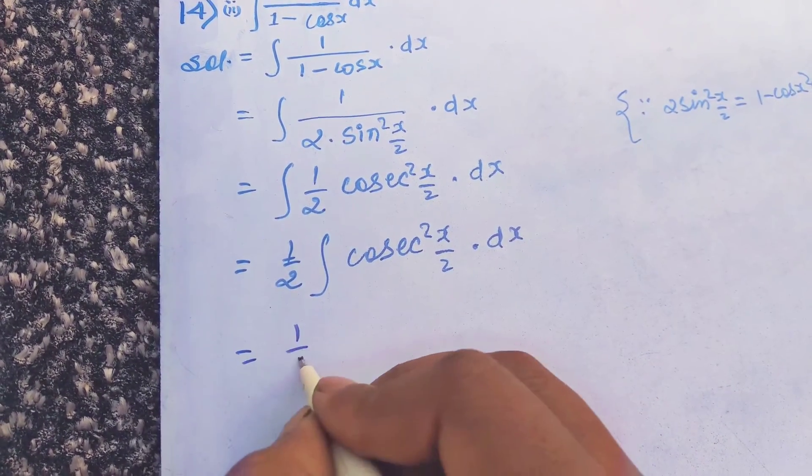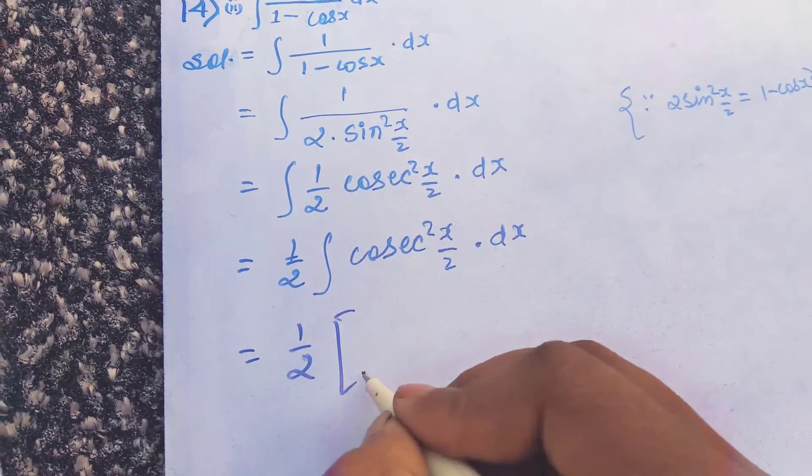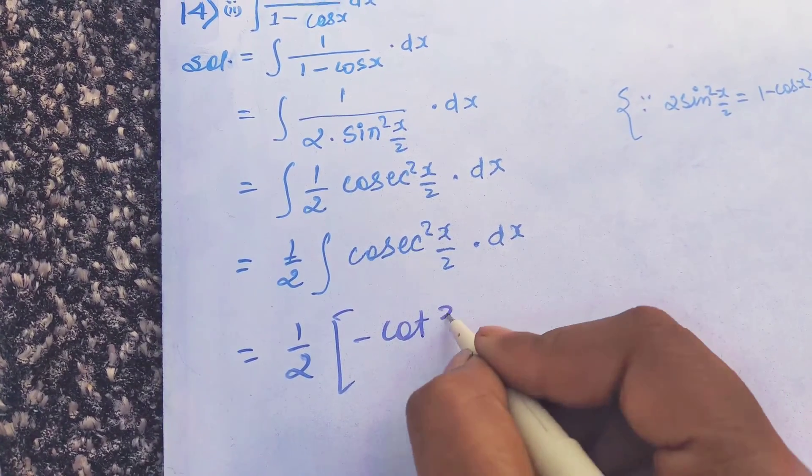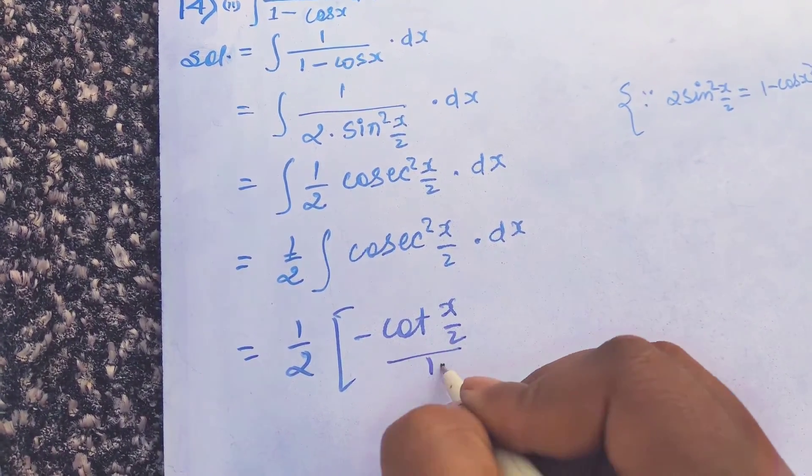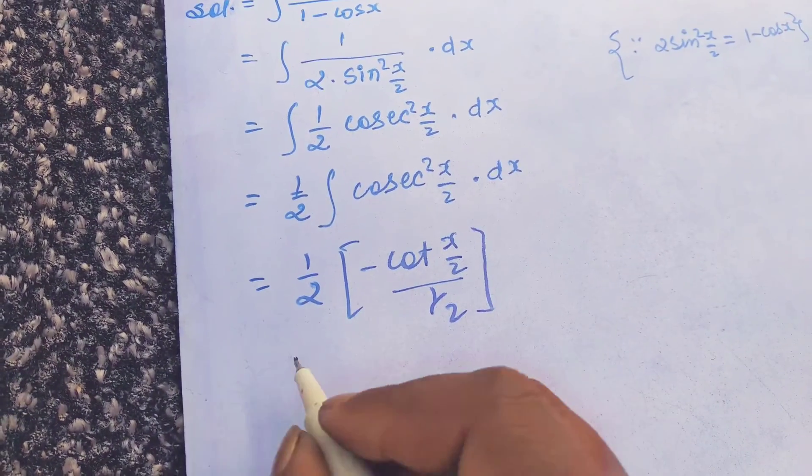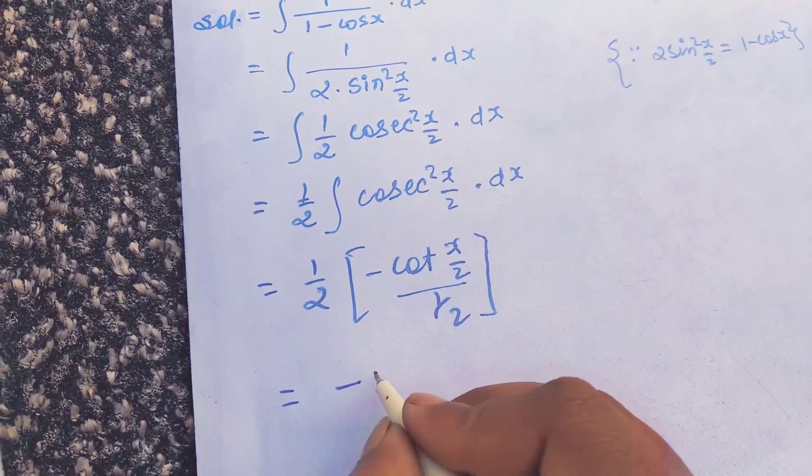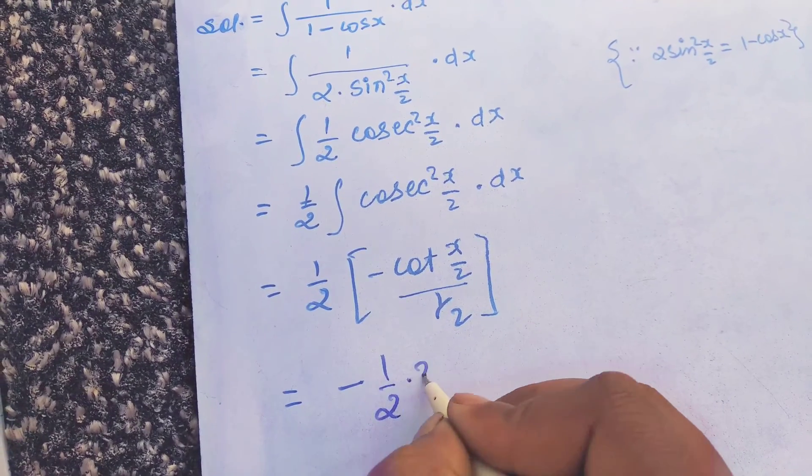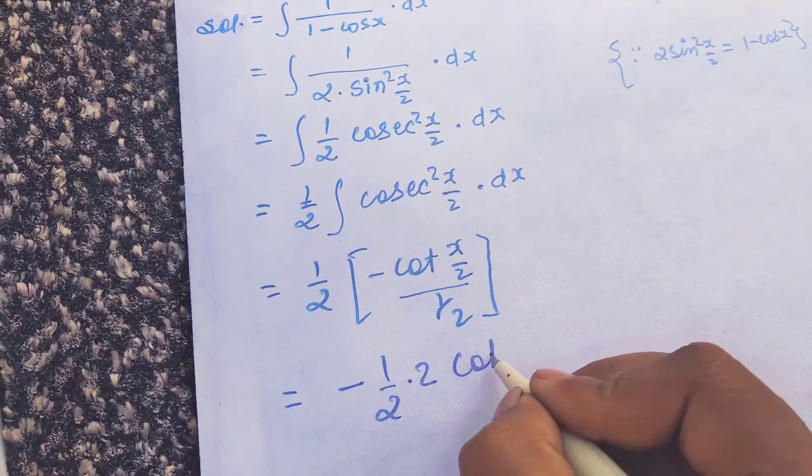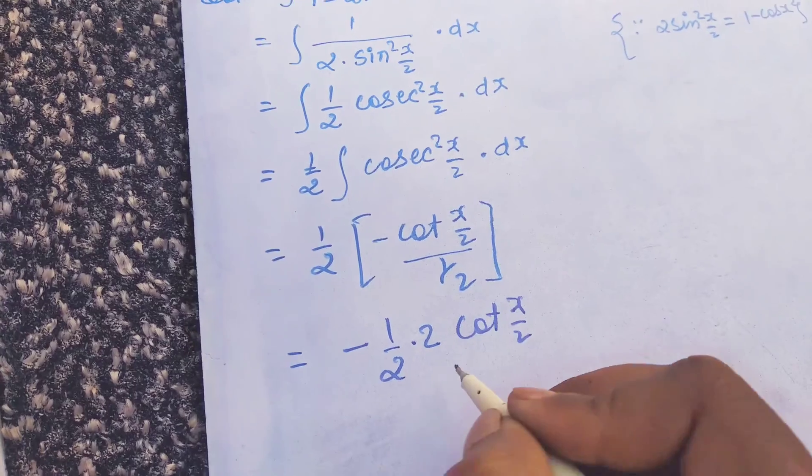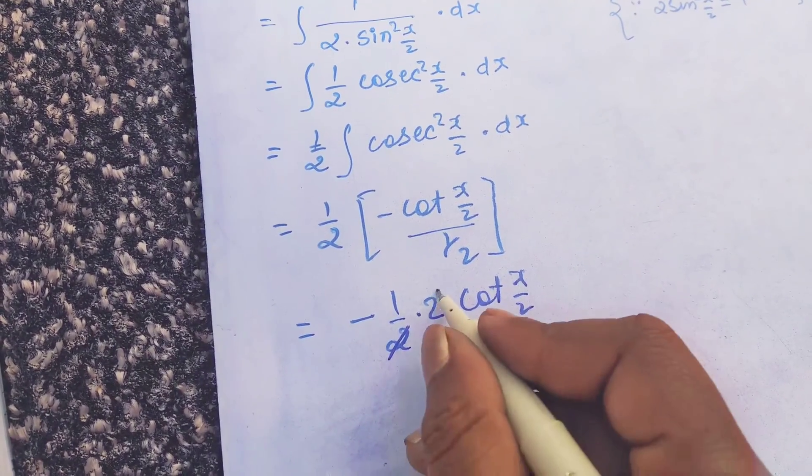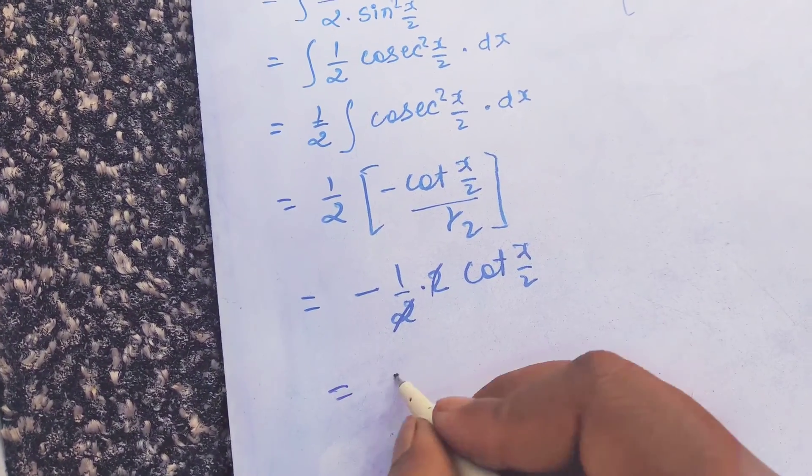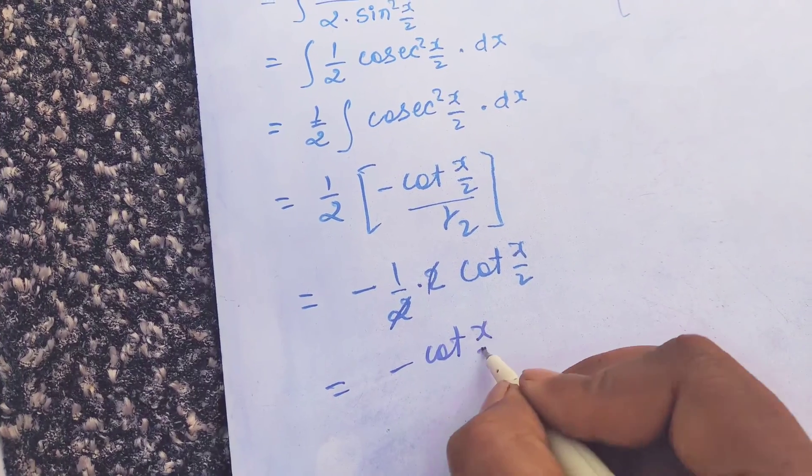It will be 1 upon 2 minus cot x by 2 upon 1 by 2. So it will be minus 1 by 2 into 2 cot x by 2. So this 2 and 2 will be cancelled out, so it will be minus cot x by 2.